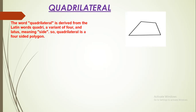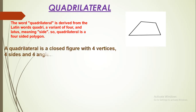The word quadrilateral is derived from Latin words quadri and lattice. Quadri means four, lattice means side. So, quadrilateral is a four-sided polygon. A quadrilateral is a closed figure with four vertices, four sides and four angles.